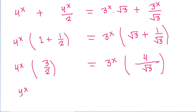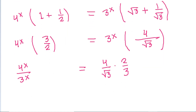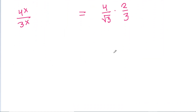Here root 3 will be the LCM and 3 plus 1 is 4, so we get 4 power x by 3 power x equal to 4 by root 3 into 2 by 3. And it is 4 power x by 3 power x equal to 4 by root 3, which is 3 power (1/2).